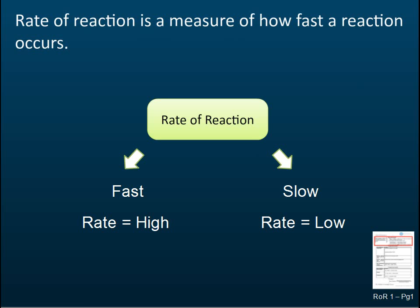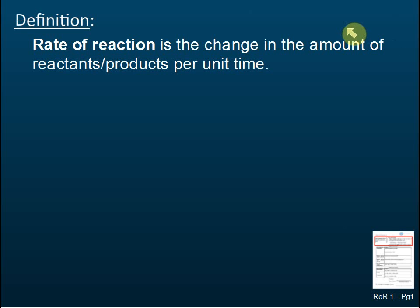We have two types of rate: high rate or low rate. If it's fast, the reaction occurs in a very short time and the rate is high. Slow means it takes longer times to complete and the rate is low.